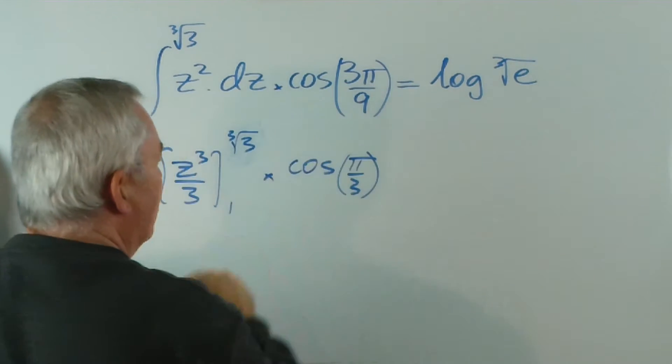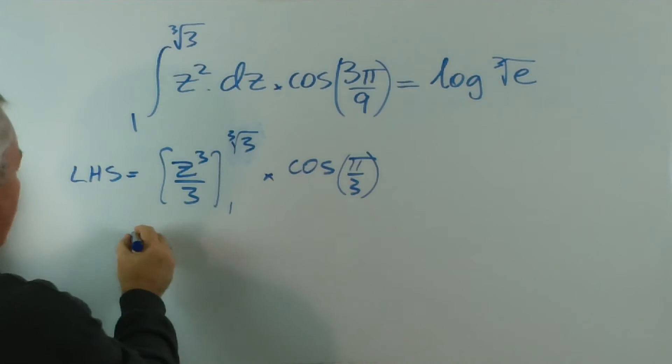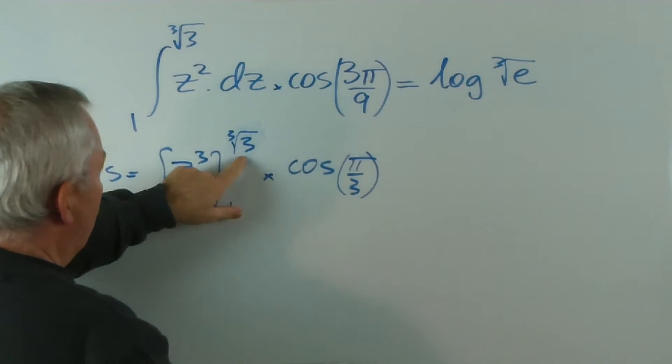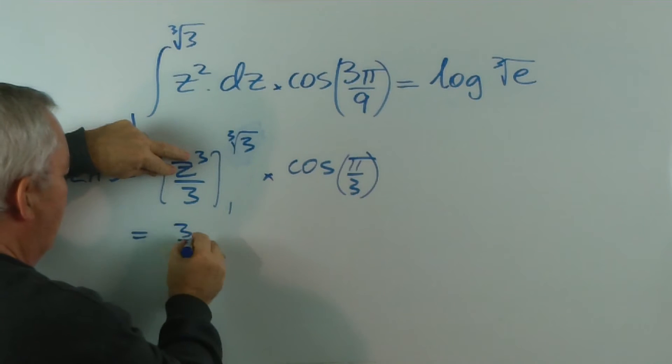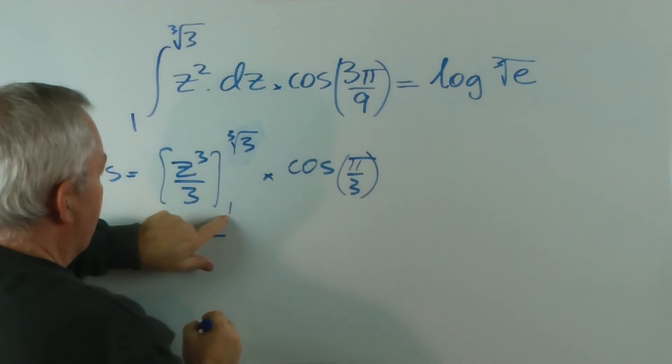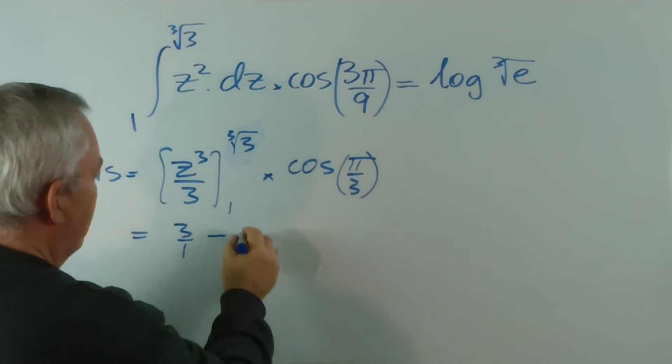We can divide 3 out there. Substituting the cube root of 3... the cube root of 3 cubed is simply going to be 3. So we'll get 3 on 3 minus... substitute 1... 1 cubed is 1...